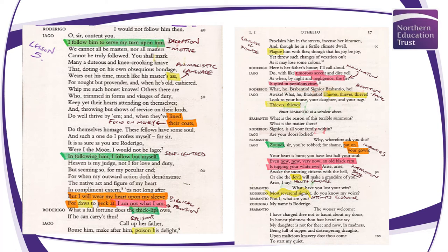Brabantio says, 'My name is Roderigo — the worse are welcome. I have charged thee not to haunt about my doors. In honest plainness thou hast heard me say my daughter is not for thee. And now, in madness, being full of supper and distempered draughts, upon malicious knavery, dost thou come to start my quiet?' He knows Roderigo has been after his daughter. But this is Roderigo's way in with Desdemona, whom he loves, and Iago is helping him.